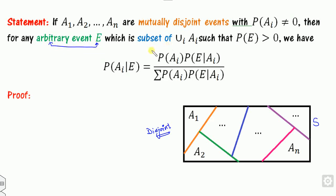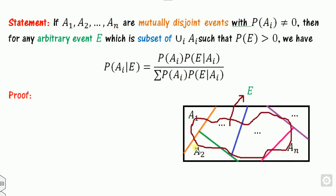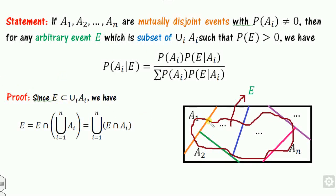Also given: event E is a subset of the union of the Ai's. Since the union is S, E is basically a subset of S. I draw E as a shape overlapping the disjoint sets — shown here in brown color. Now, since E is a subset of the union, I can write E as E ∩ (union of Ai's), using the rule that if A ⊆ B then A = A ∩ B.